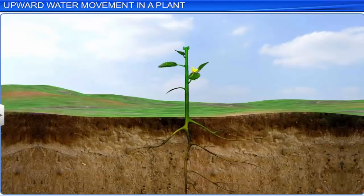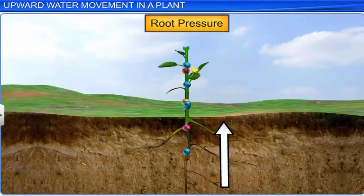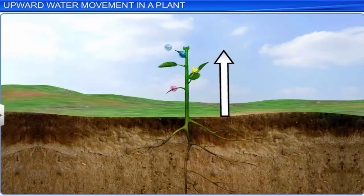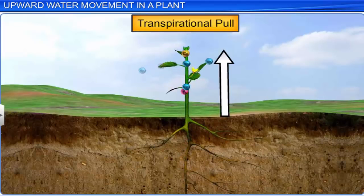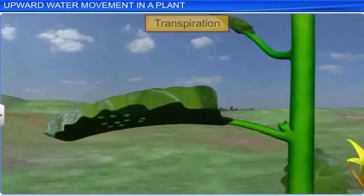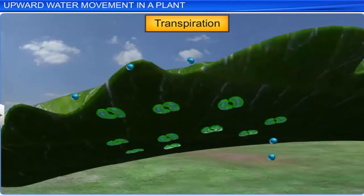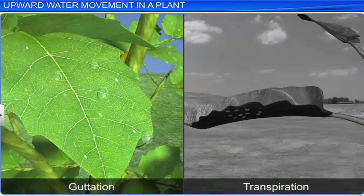However, root pressure itself does not account for the majority of water transport, because it can provide only a modest push. Most water movement in tall trees takes place due to transpirational pull. The driving force behind this transpirational pull is transpiration from the leaves. Transpiration is the process of water loss through stomata in the leaves. Unlike guttation, where water is lost in liquid form, water is lost as vapor during transpiration.